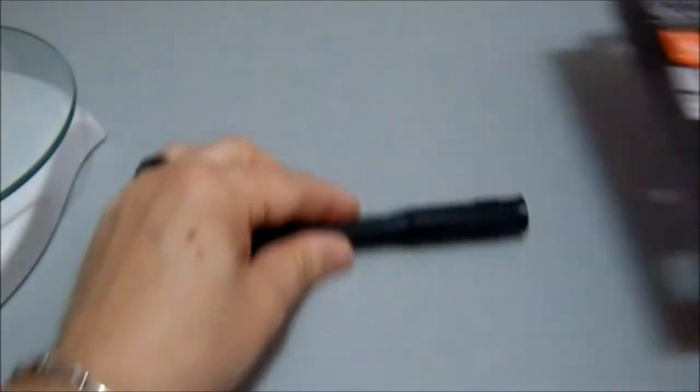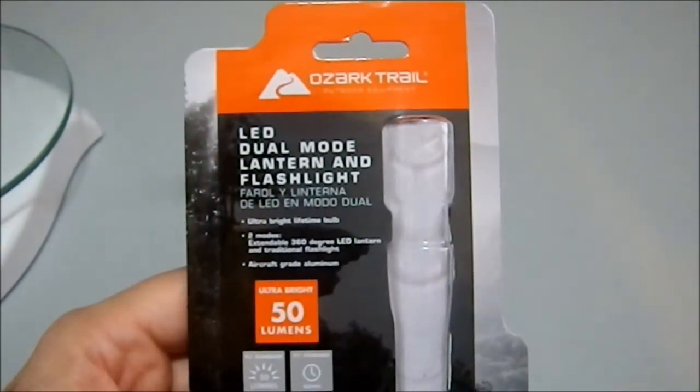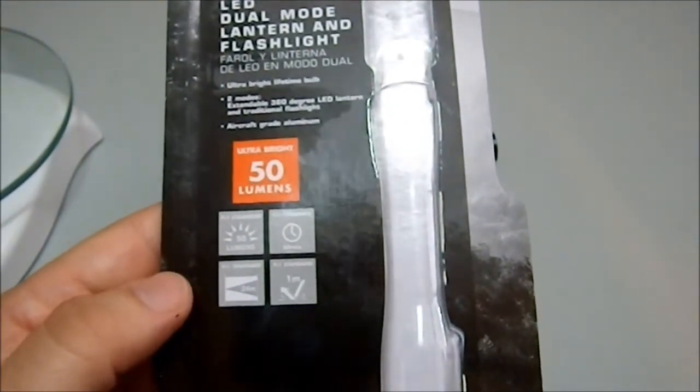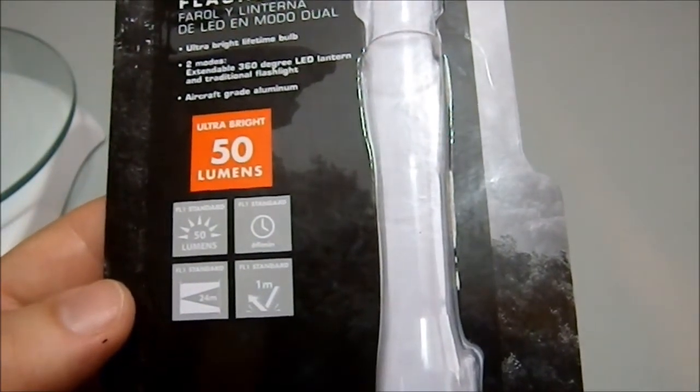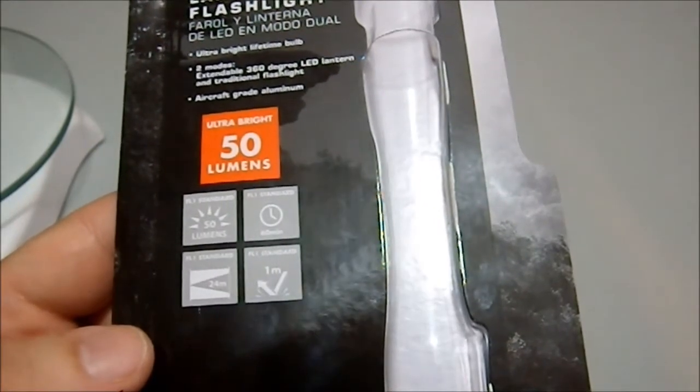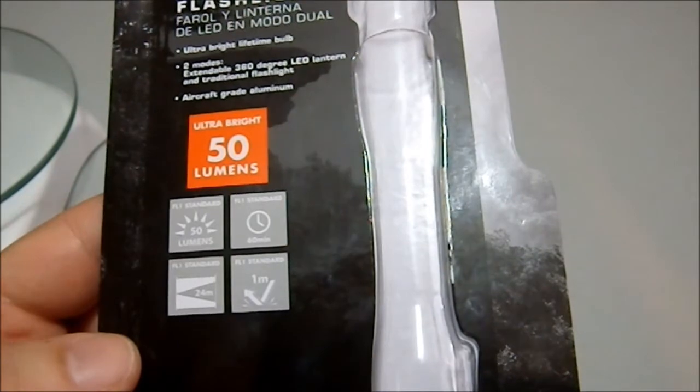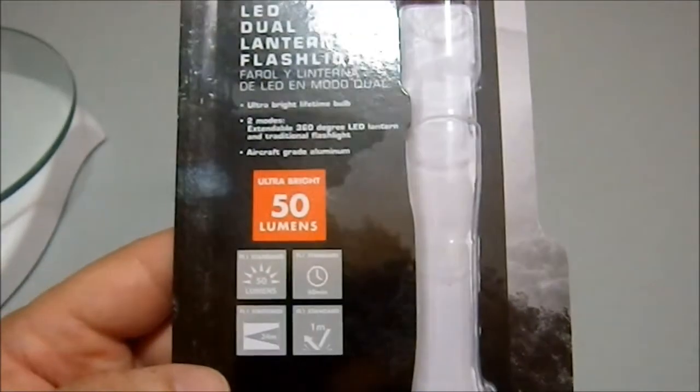So, let's get the little, it says LED dual mode lantern flashlight, 50 lumens. We got 60 minute run time, 24 meters, and a 1 meter drop distance. So, the 60 minute run time is not great. I will freely admit that.